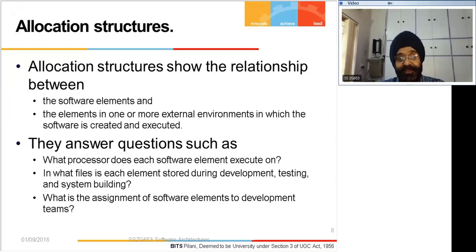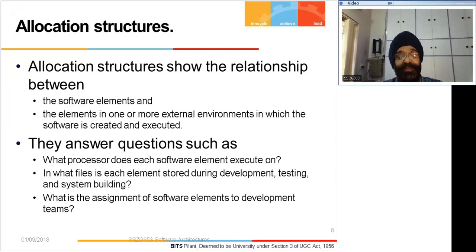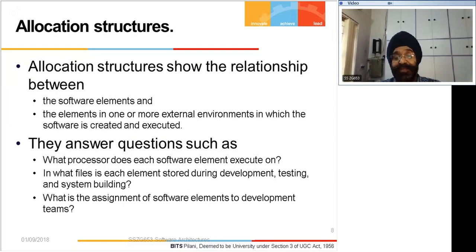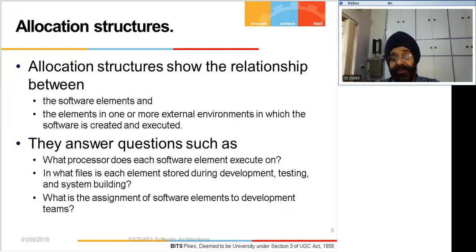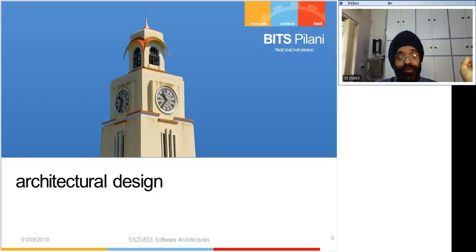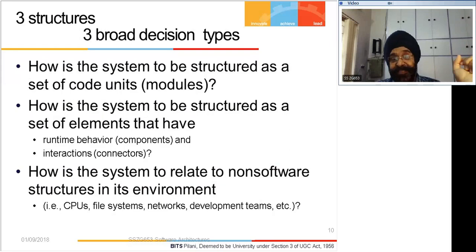Then we come to allocation structure. Allocation structure talks about the relationship between software elements and their relationship with the environment. Here you get involved with hardware - a software architect cannot forget the hardware side of things. He has to think about where files will be stored, what resources will be used, what CPUs will be used, where data will be kept, which data will be shared, and whether data will be distributed between multiple locations. All these decisions are taken in the allocation structure.